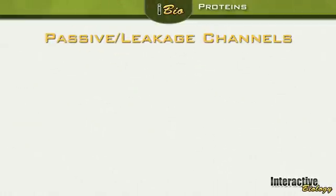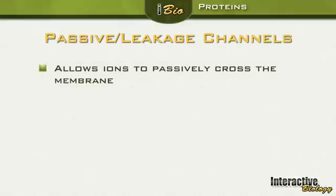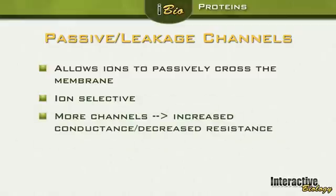First, let's talk about the passive ion channels, or leakage ion channels. This type of ion channel allows ions to passively cross the membrane — the important word here is passively. It does not take energy for this to happen. These channels are ion selective, so for example there's a specific ion channel for sodium ions and a specific ion channel for potassium ions. If we have more channels, this means increased conductance or decreased resistance — in other words, the more channels you have, the more ions can get in and the faster they can do so.